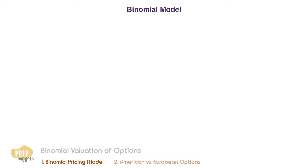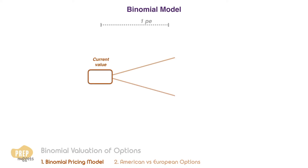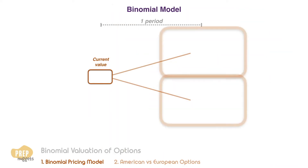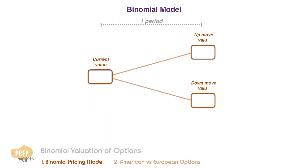Recall from quantitative methods that a binomial model is based on the idea that over the next period a value will change to one of two possible values: one for the up move and the other for the down move.